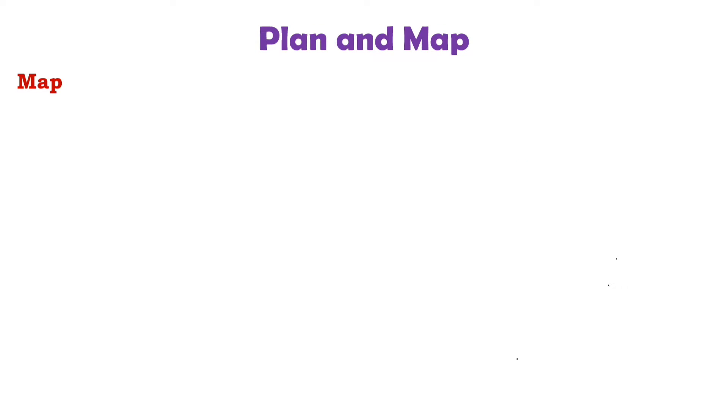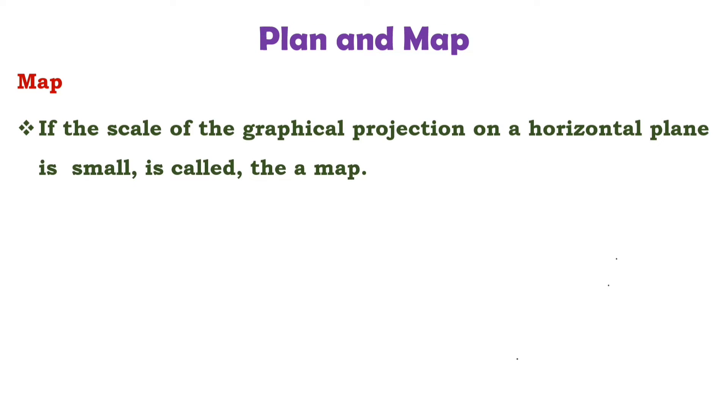Now let us see about map. If the scale of graphical projection on horizontal plane is small, means the area to be covered is more and the distortion is more, that is called map.